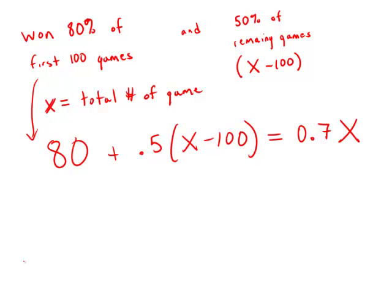This gives us an equation we can solve for x. So 80 plus 0.5x minus 50 equals 0.7x.